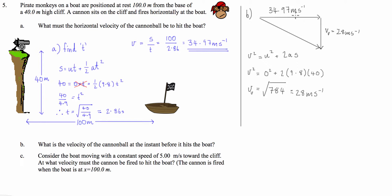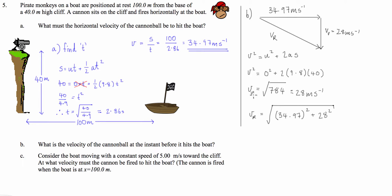Now that we have both components of our final velocity, we can work out the resultant vector using Pythagoras. The resultant velocity vr equals the square root of 34.97 squared plus 28 squared, giving a grand total of 44.8 metres per second.